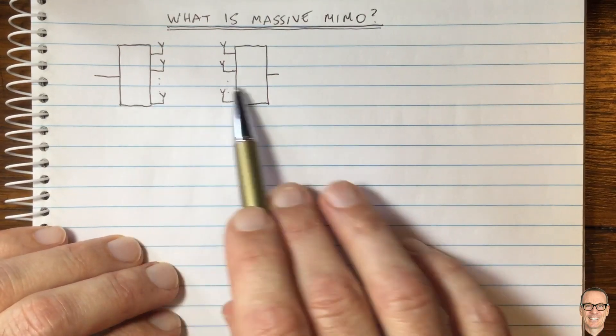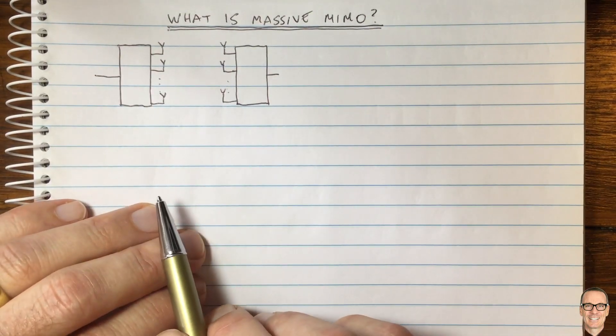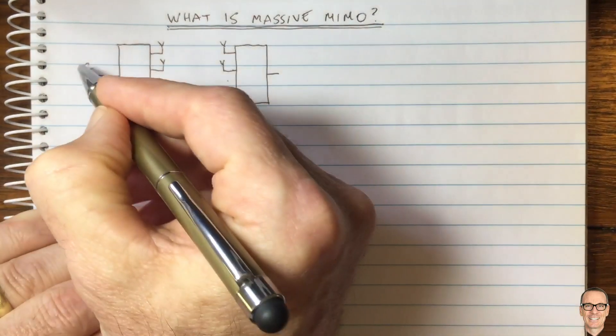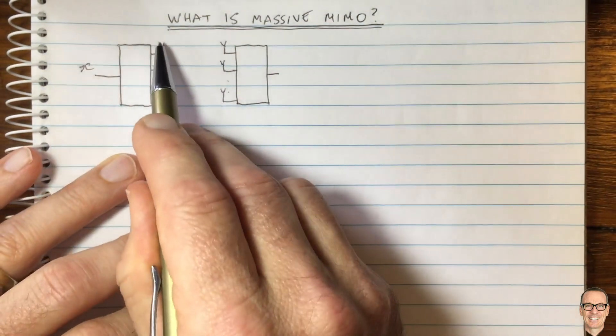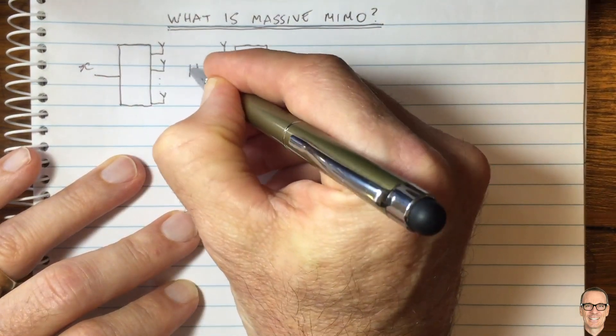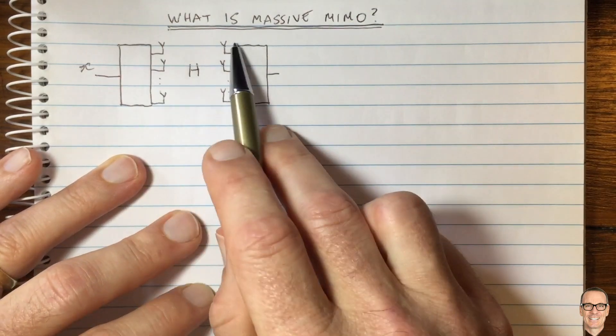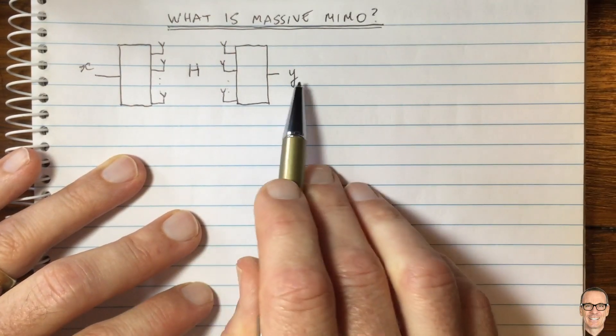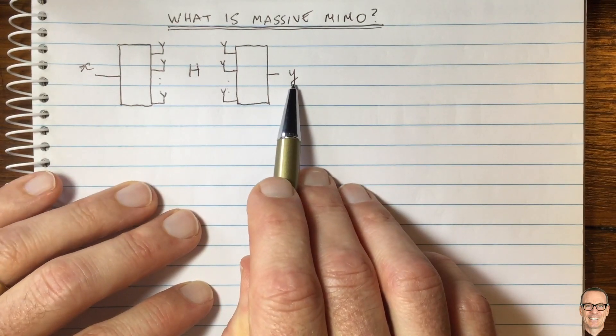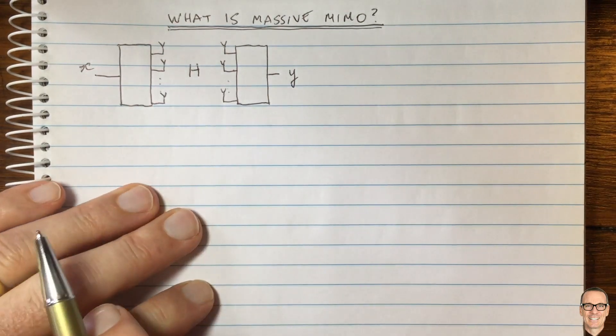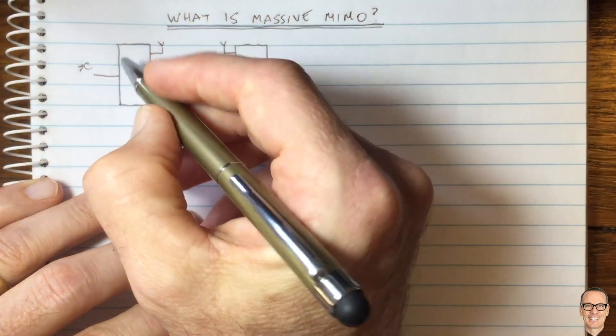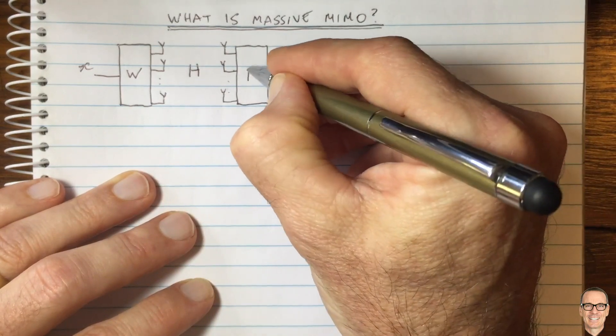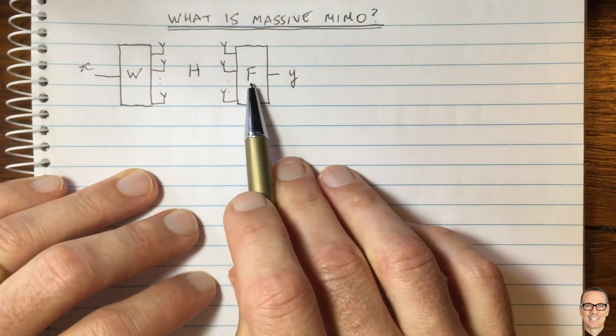Here we have a picture of the standard multiple input, multiple output wireless communications system where we have input data X going through a channel H that has multiple antennas for transmitting and multiple antennas for receiving. We try to get a signal that we can process at the receiver to estimate what the input was X, and we have an ability to do pre-coding with W and filtering at the receiver with a matrix F.